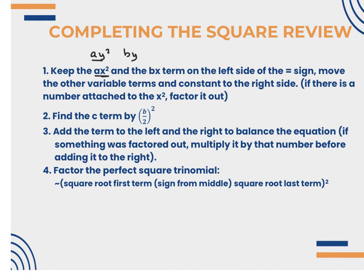To turn it into a perfect square trinomial, we make a blank space and find the c term by taking the b term, dividing it by 2, and squaring it. That's what we add to both sides to keep the equation balanced. Remember, if you factored anything out, you have to multiply it by that number you factored out before adding it to the right side.